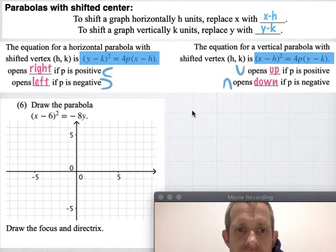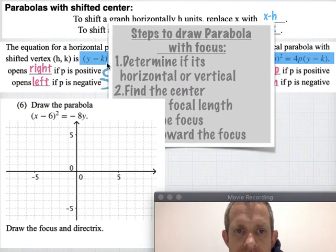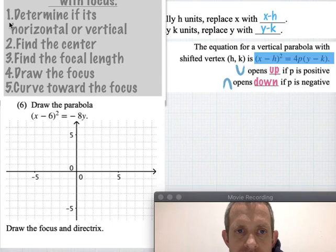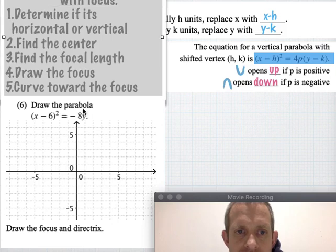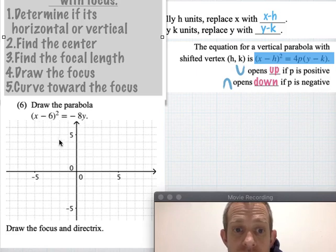We'll try one more example. So in this case, steps again here, determine if it's horizontal or vertical. This particular one is going to be a vertically oriented graph. I know that because the y is not squared and the x chunk is. So this looks like a y equals x squared sort of graph. Remember those are the up and down ones.